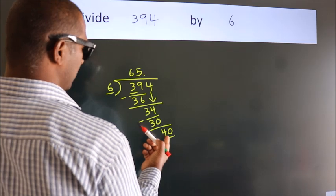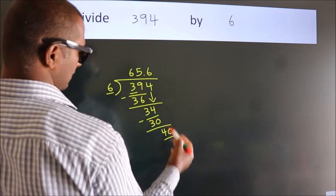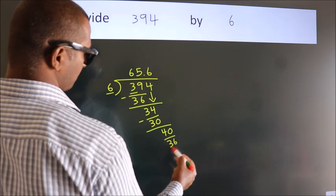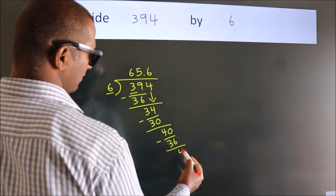A number close to 40 in the sixth table is 6×6=36. Now we subtract, we get 4.